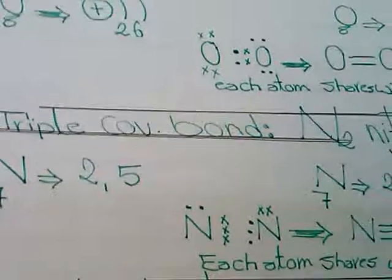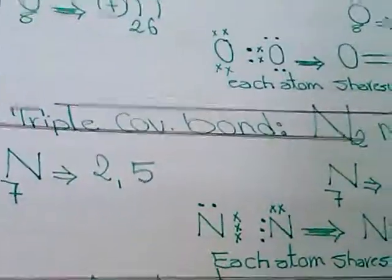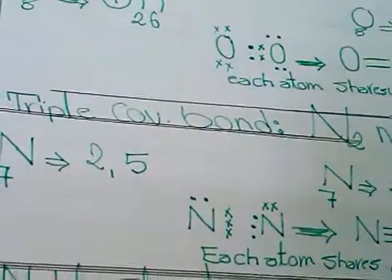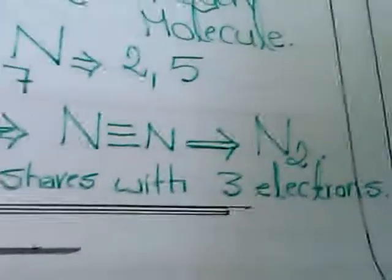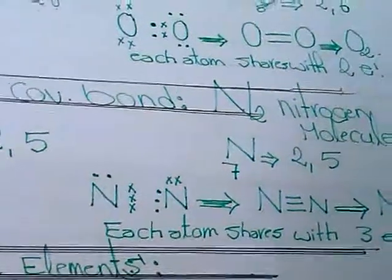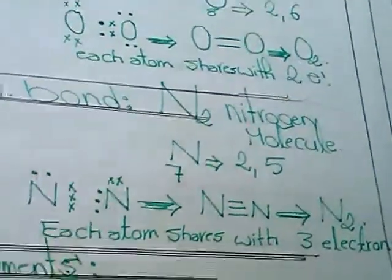Triple covalent bond is found in an example of nitrogen molecule N2. Nitrogen molecule consists of two atoms of nitrogen. Its atomic number 7, its electronic configuration 2,5. And another atom also contains five electrons in the outermost energy level. Each atom can send three electrons to another atom to share by each other to form N, triple bond N, to obtain N2.